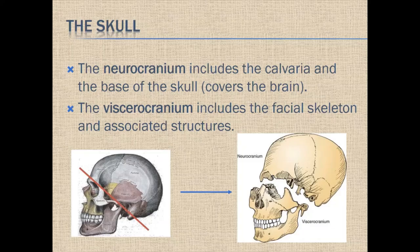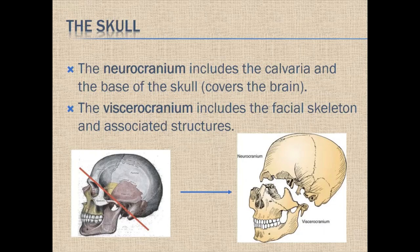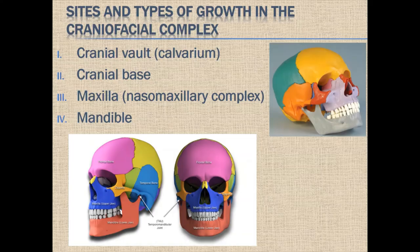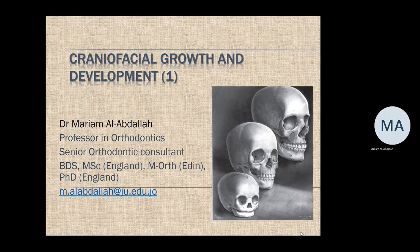Other important terminologies: the neurocranium is the part of the skull surrounding the brain, including the calvaria and the base of the skull. The viscerocranium is the rest of the facial skeleton and associated structures such as the maxilla and mandible. The sites of growth we will cover in the next lecture are the cranial vault, the cranial base, the maxilla, and the mandible. Thank you for listening.